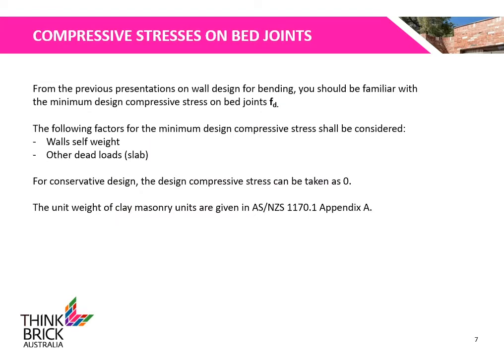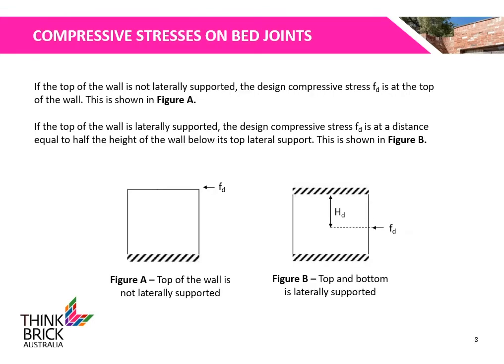From the previous presentations on wall design for bending, you should be familiar with the minimum design compressive stress on bed joints. The value shall be determined from the minimum design compressive force at the bed joint under consideration and the design cross-sectional area of the bed joint. Factors such as the wall's self-weight and other dead loads such as slabs or roof trusses shall be considered. If the top of the wall is not laterally supported, the design compressive stress is at the top of the wall, as shown in figure A. If the top of the wall is laterally supported, the design compressive stress is at a distance equal to half the height of the wall below its top lateral support, as shown in figure B.